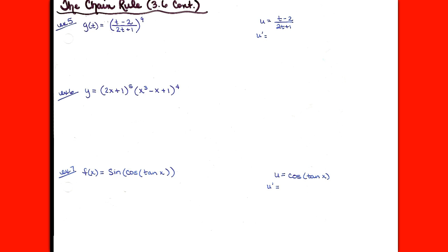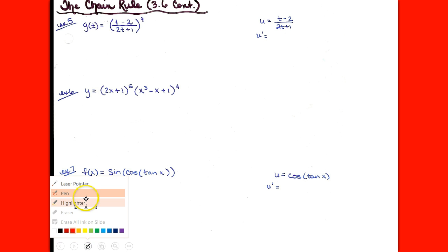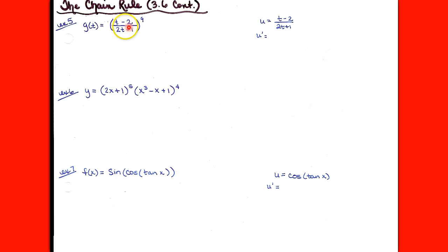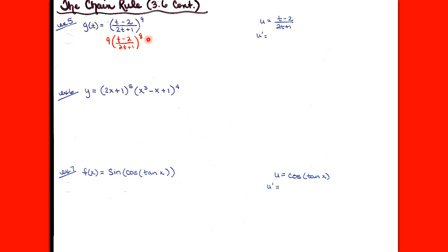For example number 5, we have the derivative of a quantity raised to the 9th power. Like we saw yesterday, we can't take the derivative of a quantity without the chain rule. No matter what you have in the parentheses, the derivative of something to the 9th power would be 9 times that something to the 8th power. Just bring it along for the ride — that's the derivative of the outside function in terms of the inside function.